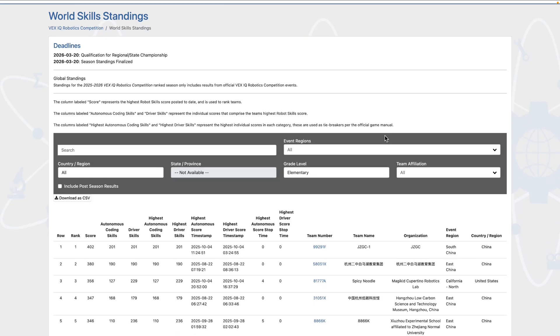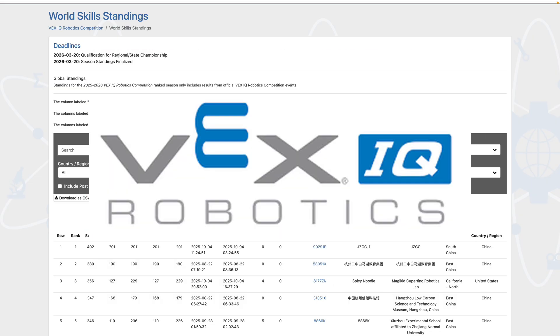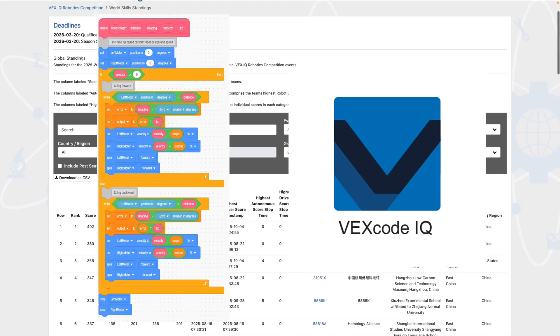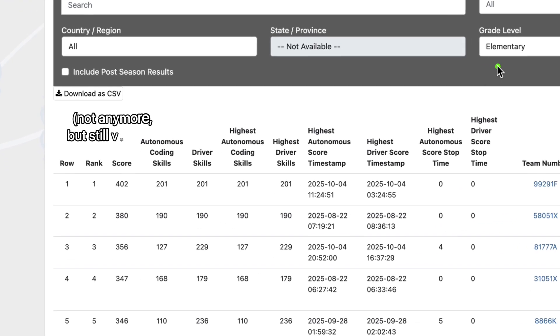Alright guys, now that the season's been picking up, I'm sure many of you are headed to competitions. One of the biggest challenges in VEX IQ every year is the autonomous coding challenge. So today I'm going to be analyzing and breaking down a 201 point autonomous run, which is actually the current world record for skills.